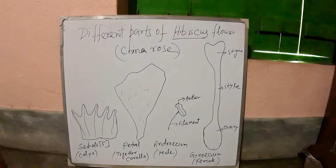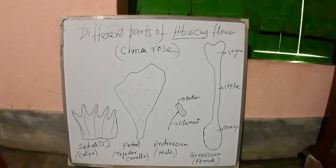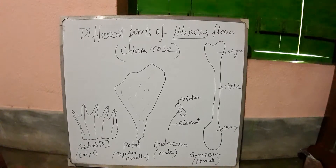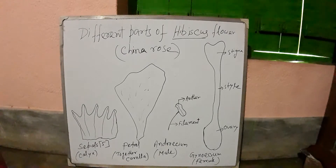Five sepals are fused together to form the calyx. Five petals together form the corolla. The male part is called androecium and the female part is called gynoecium. Androecium is divided into two main parts: filament and anther. Gynoecium is divided into three parts: ovary, style, and stigma.